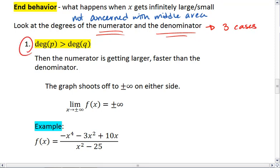In the first case, the degree of the numerator is larger than the degree of the denominator. Say we have a fifth degree polynomial over a second degree polynomial. As x gets really large, both polynomials increase, but the numerator increases faster than the denominator. When you're dividing a much larger number by a smaller number, the whole fraction is larger.